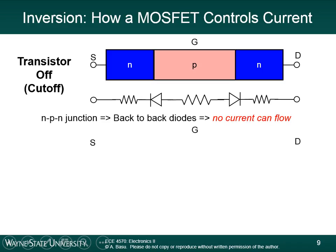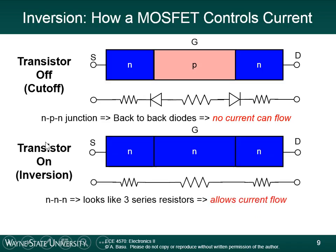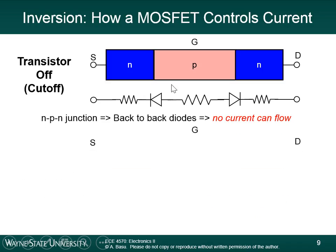This is in principle how a MOSFET works. In the cutoff state, the source and drain are N-type — this is an NMOS device — and the region under the gate is just P-type semiconductor. This is what it looks like as a circuit: there's a P-N junction diode here, the P-type semiconductor is a resistor, and there's another P-N junction diode on the other side. If you connect a voltage between source and drain, you wouldn't get any current because you have two back-to-back diodes pointed in opposite directions.